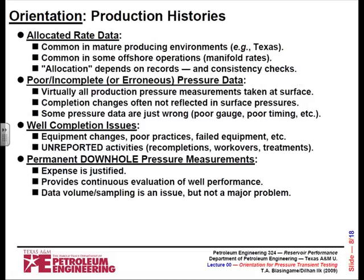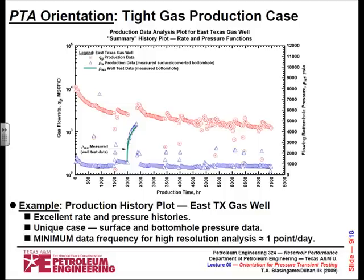In Texas, you've got 500,000 operating wells, and you're allowed to allocate data, you're allowed to report by lease, and then people have back-allocated by well. This is very common. It's also very common in certain countries where they're only looking at gross production — you may only have a measurement a month that reflects reality. Just be very careful with allocated data. The other thing is poor and incomplete pressure records and well completion issues — there's always going to be something that somebody did that they didn't put in the report.